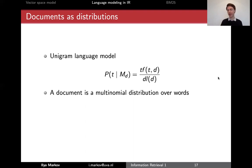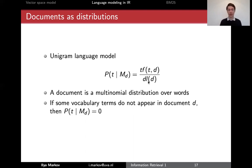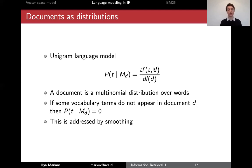So you toss a many-sided dice with as many sides as there are words in the vocabulary, and you see how many times each word occurs. This is a multinomial distribution. Obviously, if a word doesn't occur in the document its probability is zero because term frequency is zero. That's a limitation, and we will address it later using smoothing.